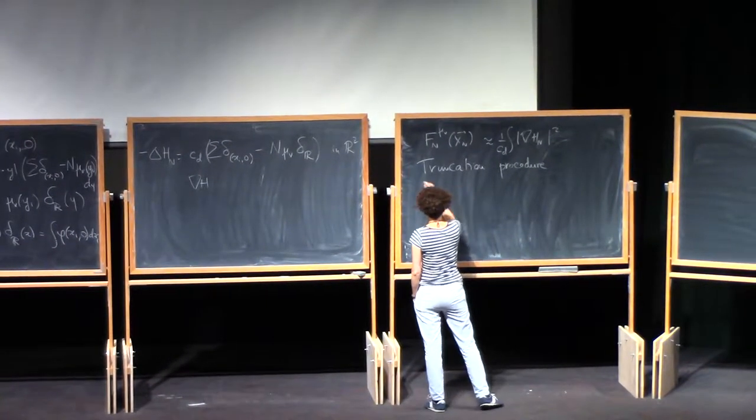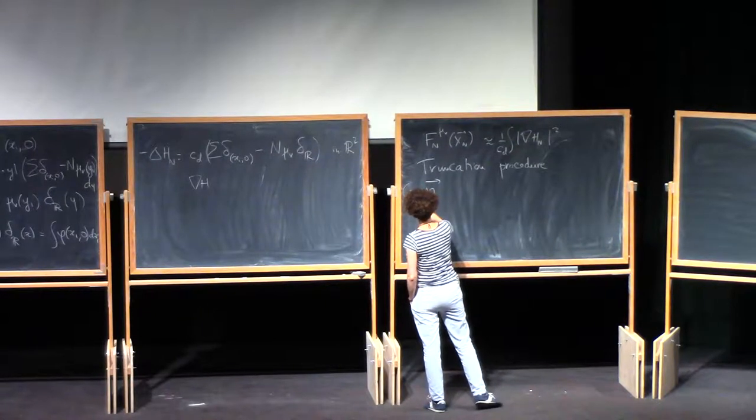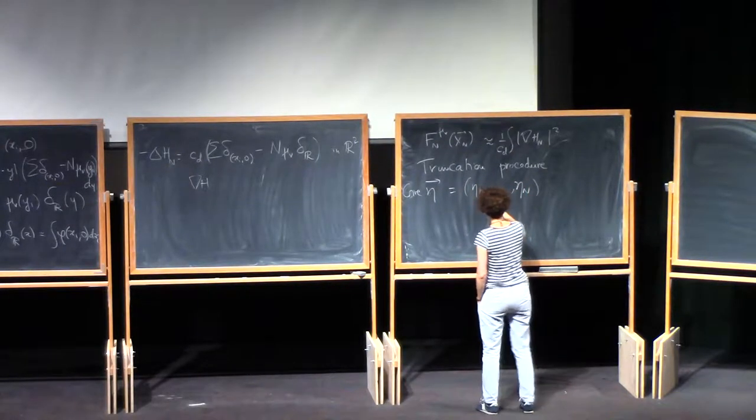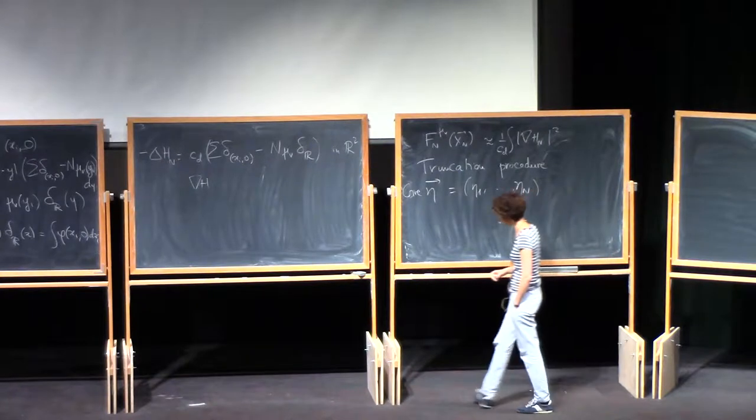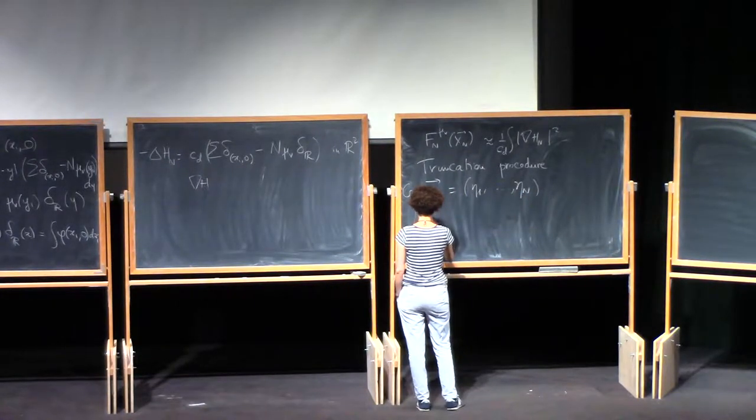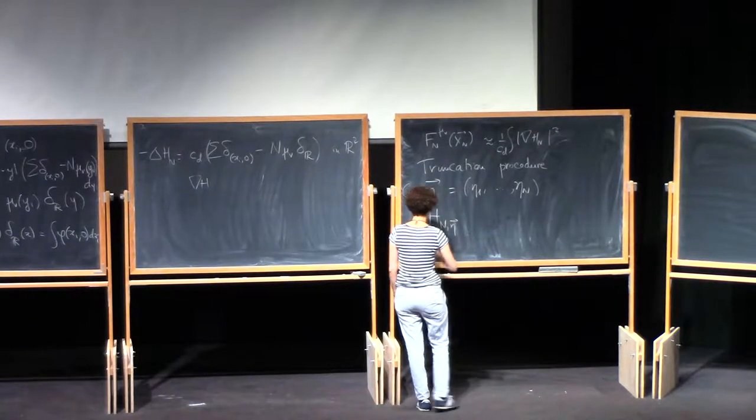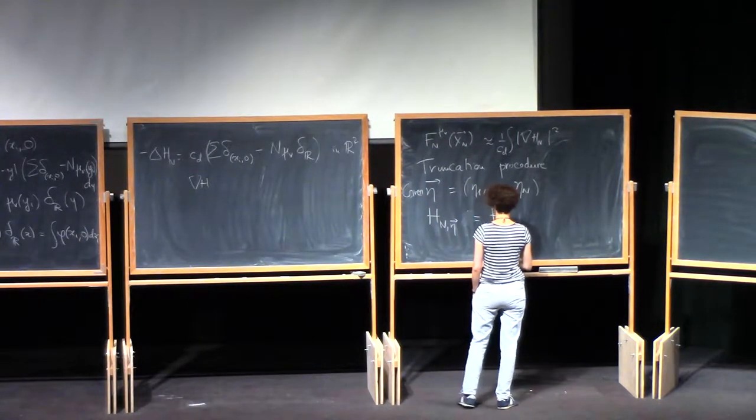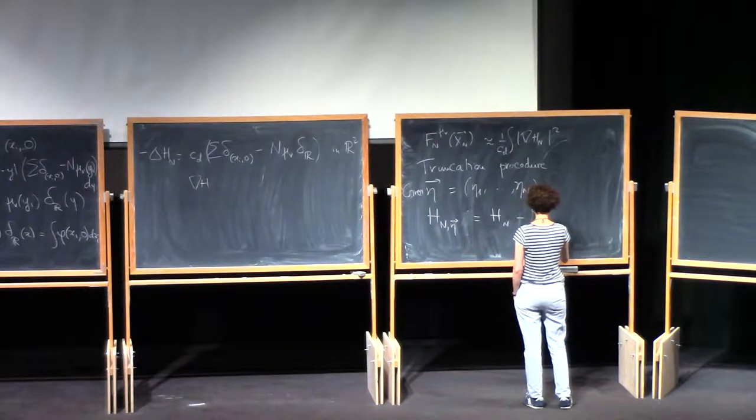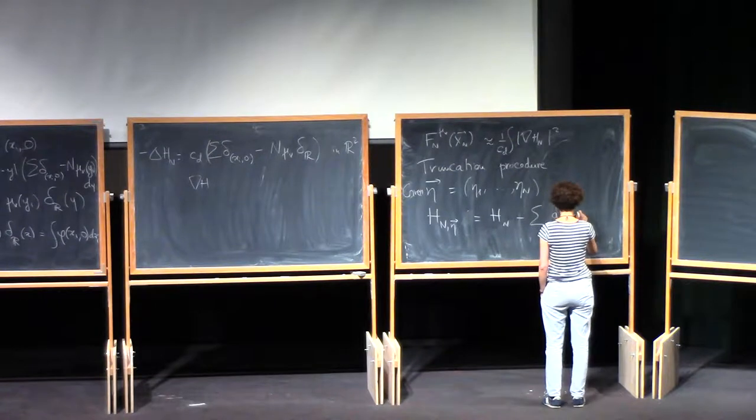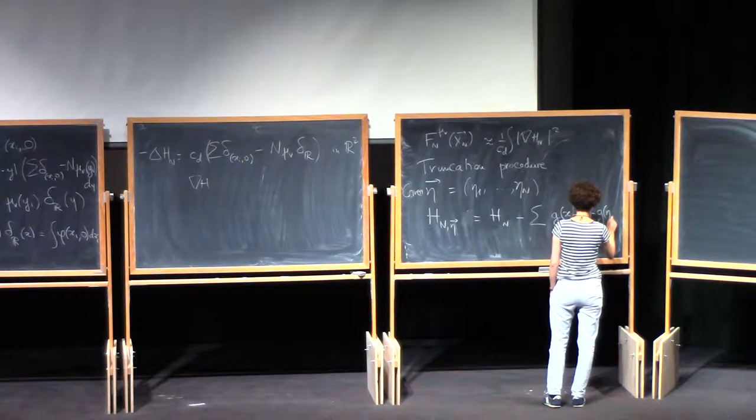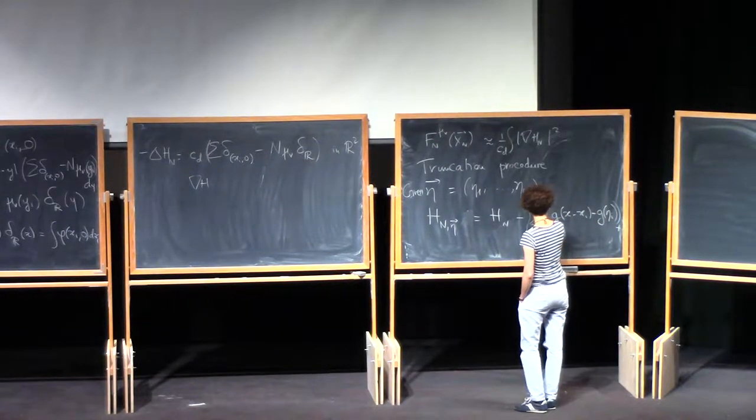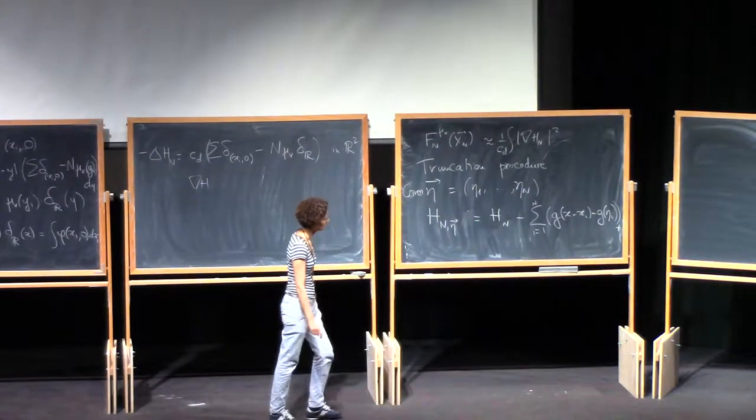So I define, I'm giving myself some eta, which is just a vector of numbers, eta1 to eta n, and think of them as small numbers. And I define Hn eta to be Hn minus the sum of g of x minus xi minus g of eta i, positive part.